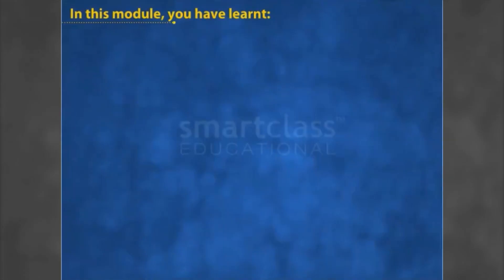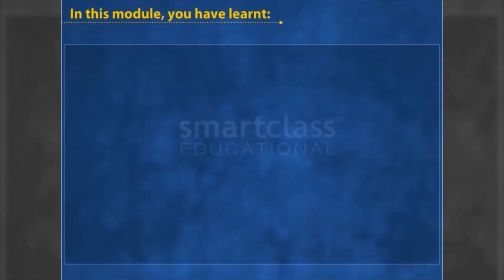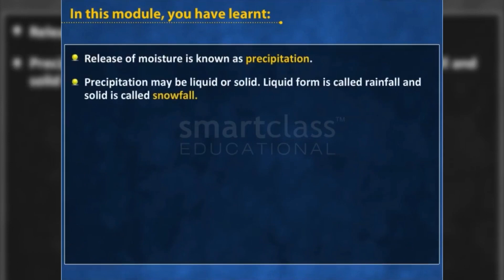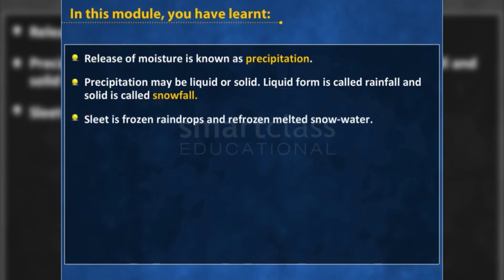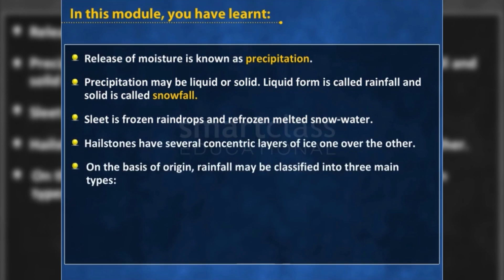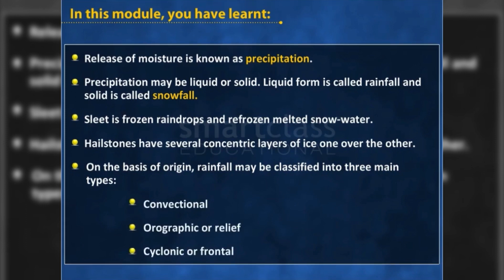In this module you have learned: release of moisture is known as precipitation. Precipitation may be liquid or solid — liquid form is called rainfall and solid is called snowfall. Sleet is frozen raindrops and refrozen melted snow water. Hailstones have several concentric layers of ice, one over the other. On the basis of origin, rainfall may be classified into three main types: convectional, orographic or relief, and cyclonic or frontal.